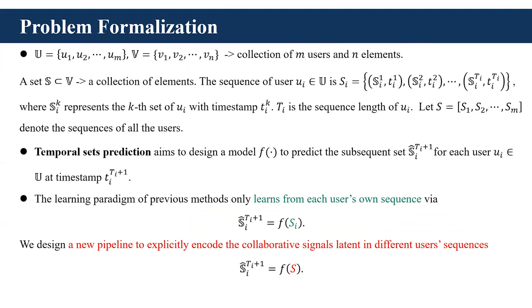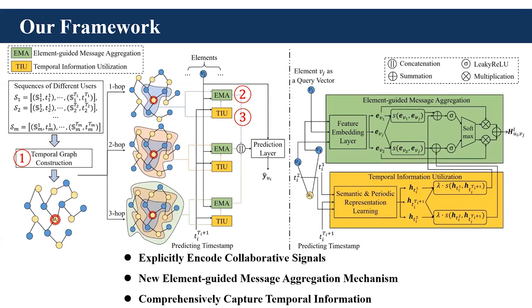Here is the framework. The framework consists of three components. The first component constructs a temporal graph to connect the different sequences and turns the temporal set prediction problem from sequence learning to temporal graph representation learning. The second component learns element-specific representations for each user, and the collaborative signals latent in high-order user-element interactions are learned by aggregating messages on multiple hops. The third component captures the semantic and periodic patterns in user sequential behaviors. We have the following three contributions: we explicitly capture collaborative signals, design a new message aggregation mechanism, and comprehensively capture temporal information.